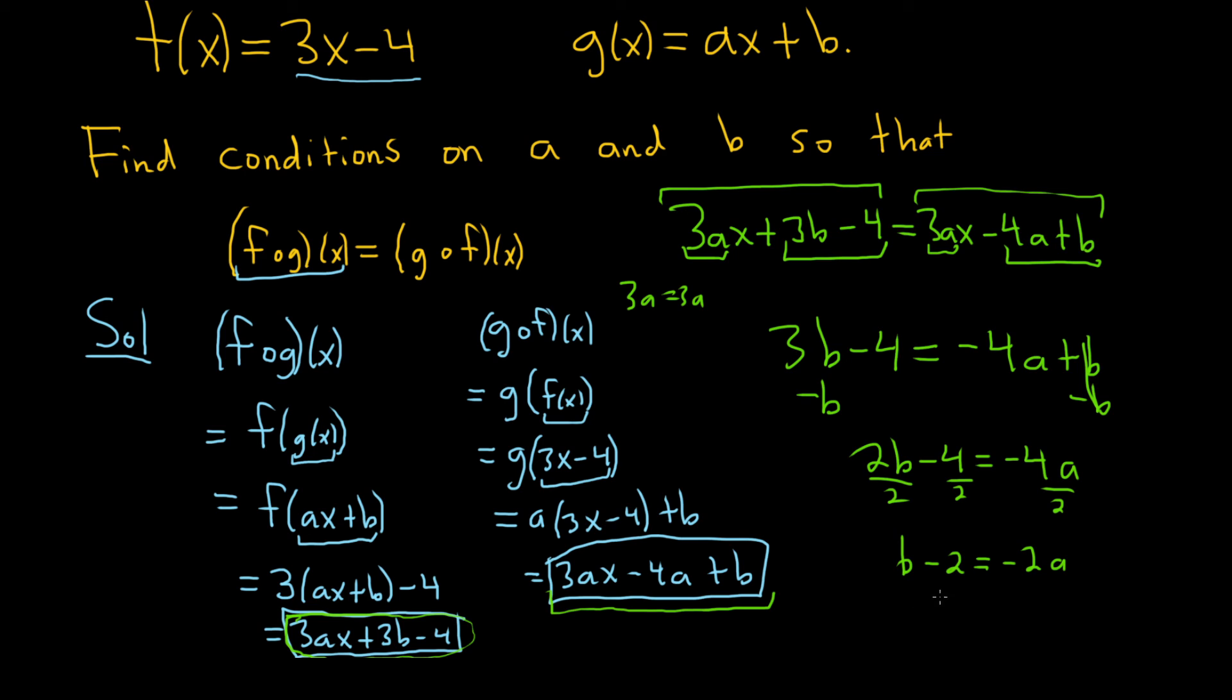So you could solve for b now pretty easily by adding 2. So b is equal to 2 minus 2a. That's a really sloppy 2 there. That's a plus 2. So that's the condition on a and b.